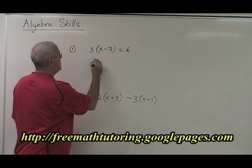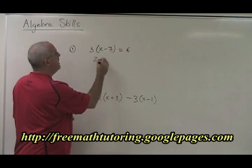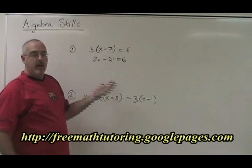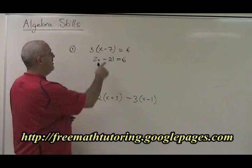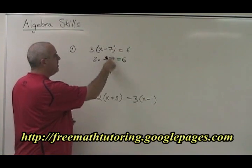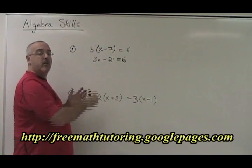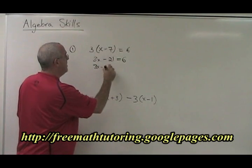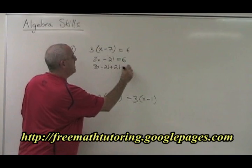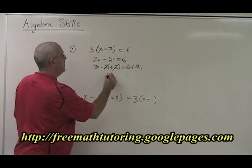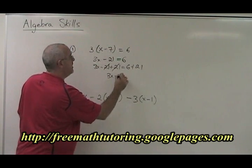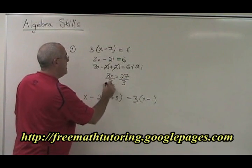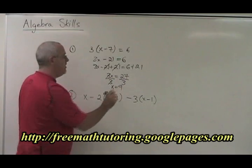3 times x is 3x. 3 times negative 7 is negative 21. And now we go back to our basic skills of algebra. We want to get this minus 21 away from the x in order to get the x alone. So we write 3x minus 21 plus 21 equals 6 plus 21. These cancel. 3x equals 27. Now divide both sides by 3. Cancel, cancel, and x equals 9. You have your answer.